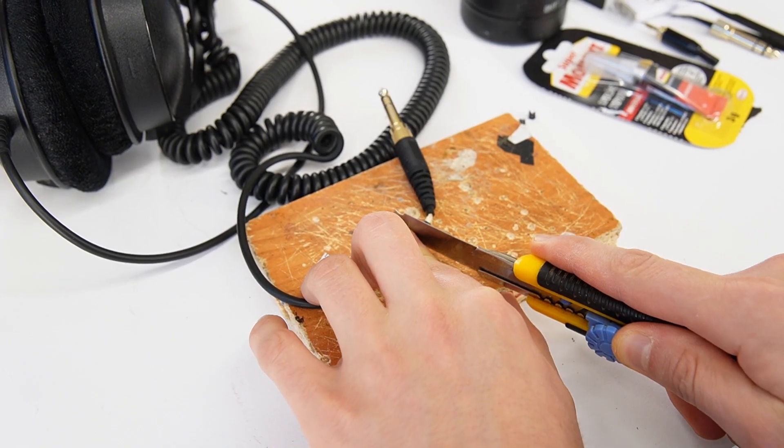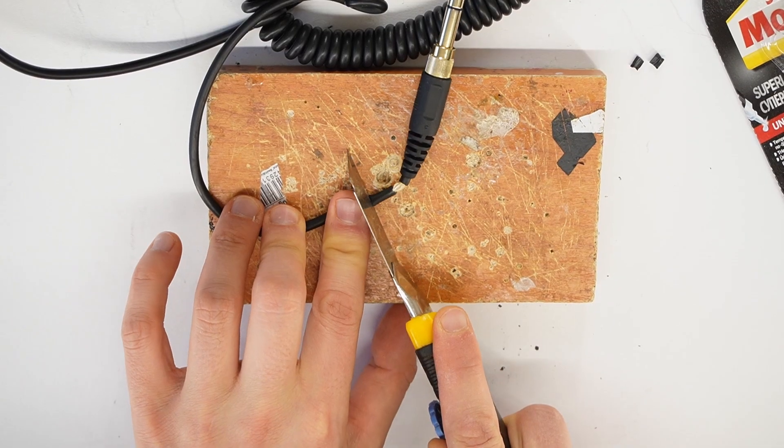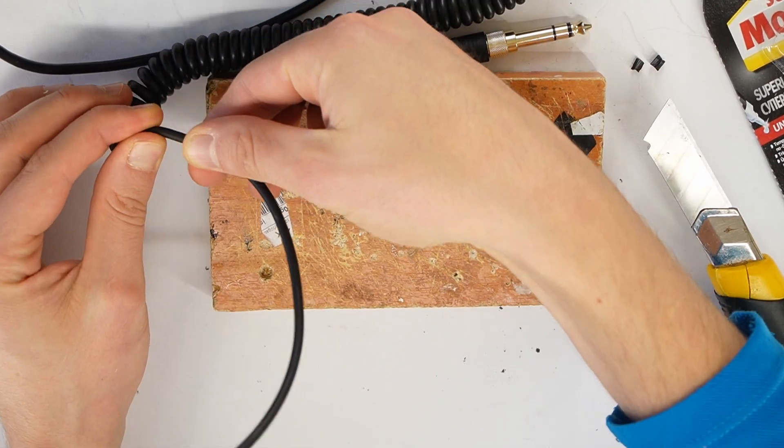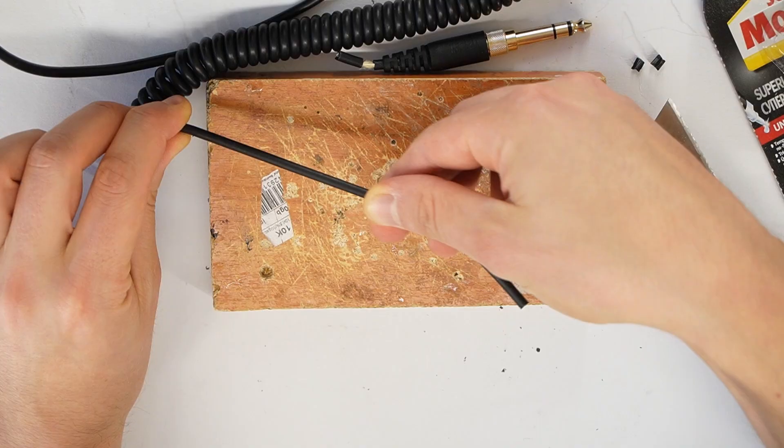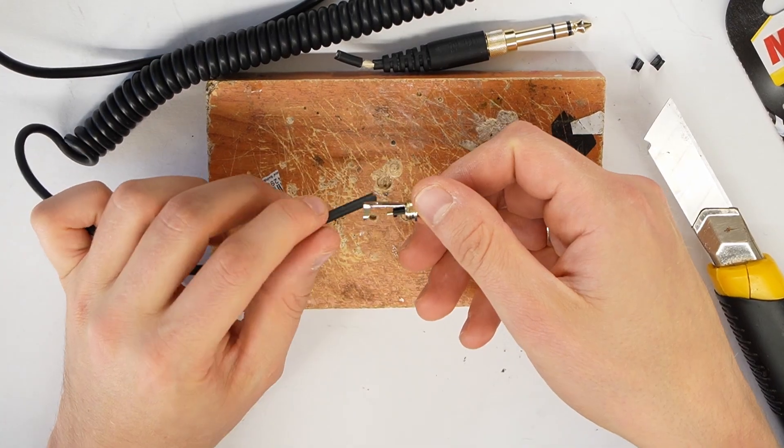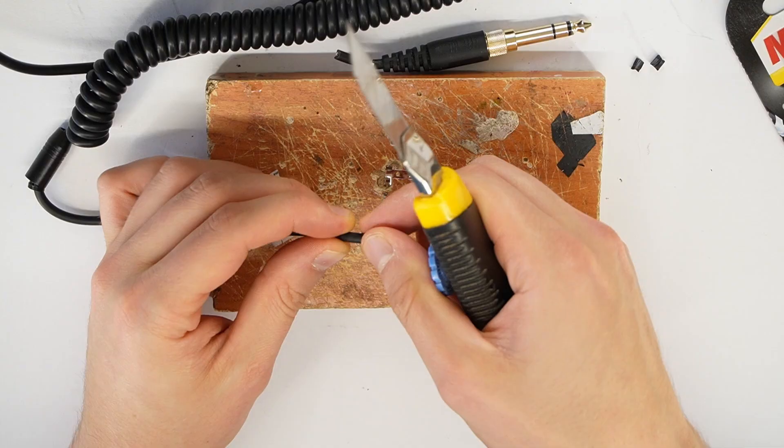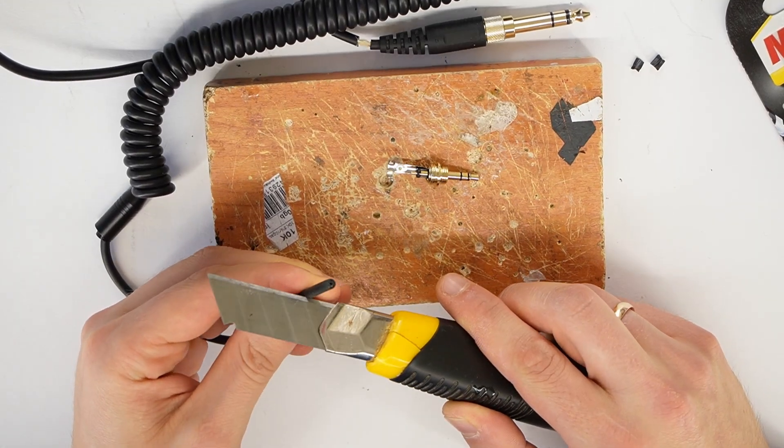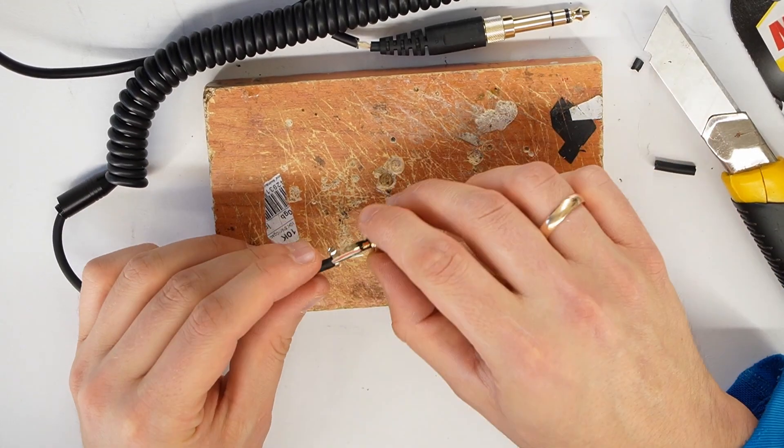The first step is to cut off the damaged jack, leaving a few centimeters of cable. Then stretch the cable slightly to straighten it. Put on the new jack housing and measure how much outer insulation you need to cut off. Carefully remove the outer jacket without damaging the internal wires.